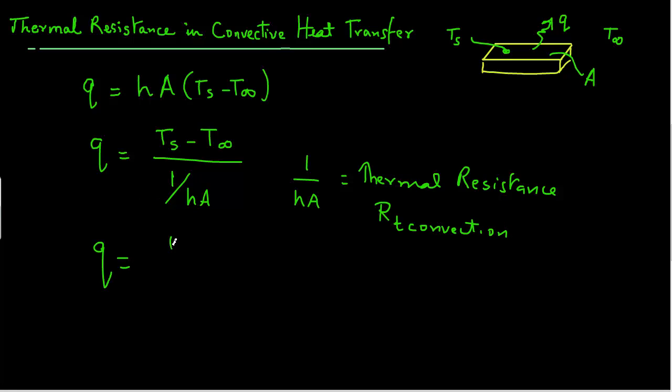So in case of convective heat transfer, we can also write Q equals Ts minus T infinity divided by RT convection. We will use this later in a module on overall heat transfer.